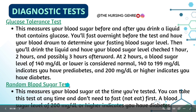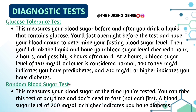Random blood sugar test measures your blood sugar at the time you are tested. You can take this test at any time and do not need to fast first. A blood sugar level of 200 mg/dL or higher indicates diabetes.